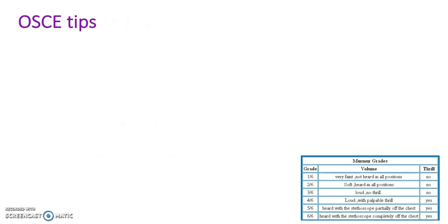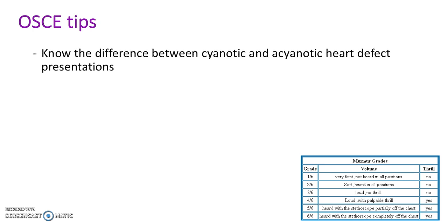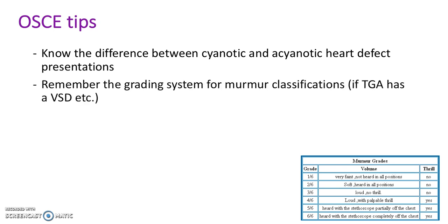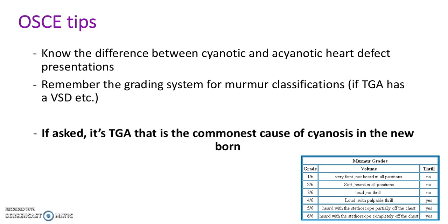Here are some tips for OSCE. Know the difference between cyanotic and acyanotic heart defect presentations. Remember the grading system for murmur classifications. If asked, it's TGA that is the most common cause of cyanosis in a newborn.